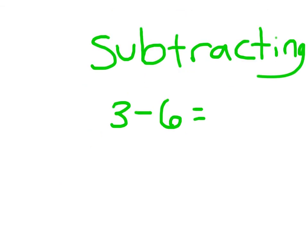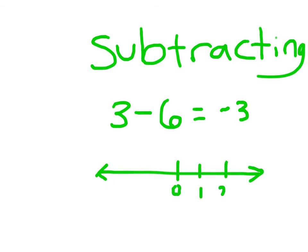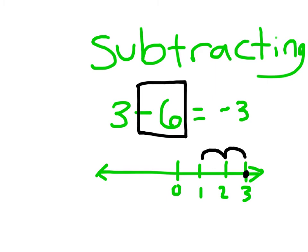Let's take a look at subtracting. We have 3 minus 6, and what we end up with is negative 3. Here's our reasoning: on the number line, I'll start at 3 and go left for minus 6 — because we're subtracting, we move left. 1, 2, 3 gets us to 0, and then negative 1, negative 2, and negative 3.